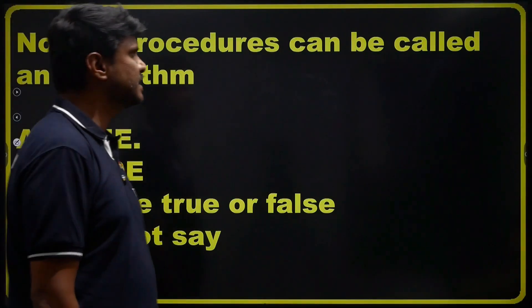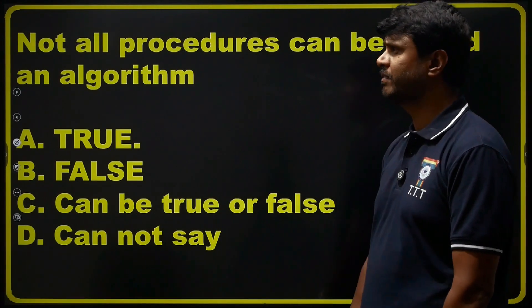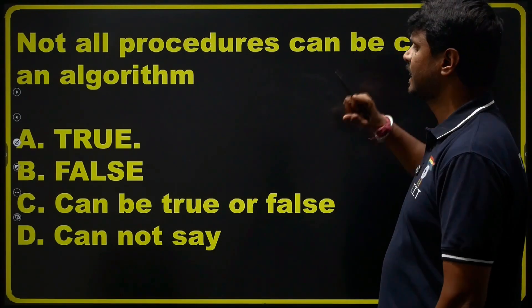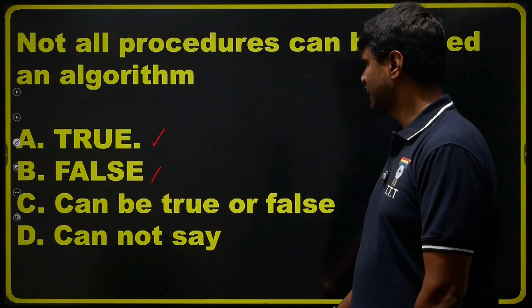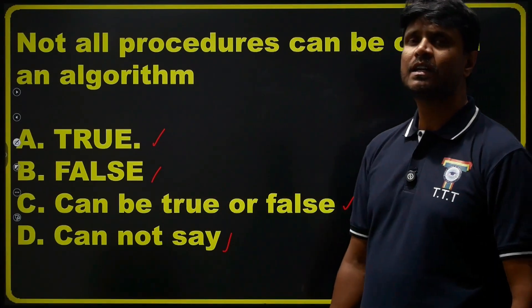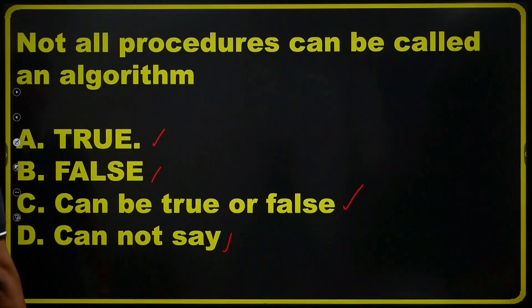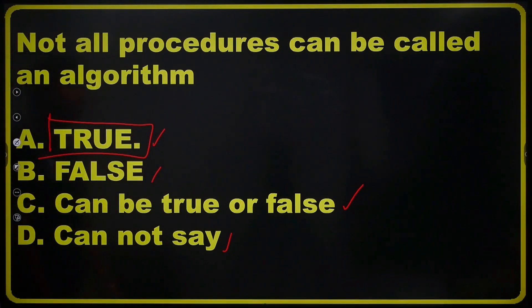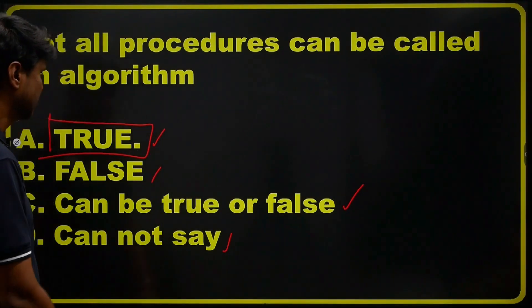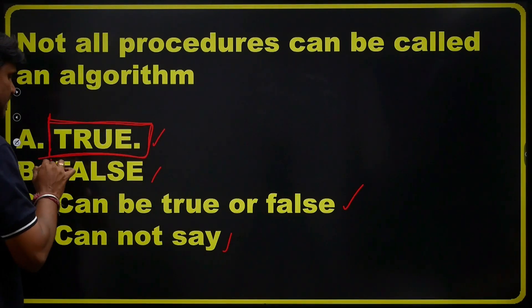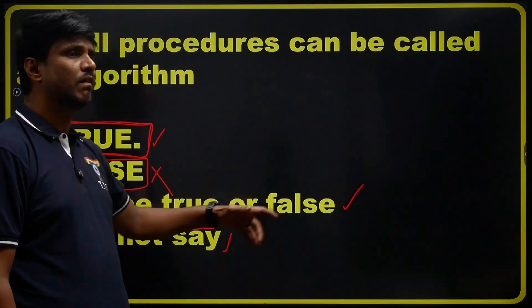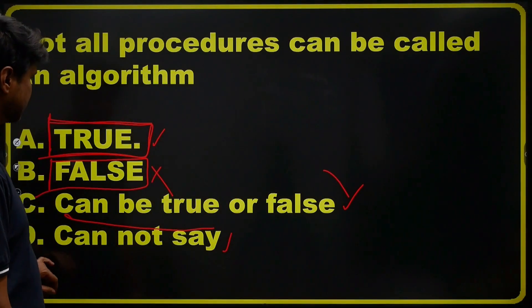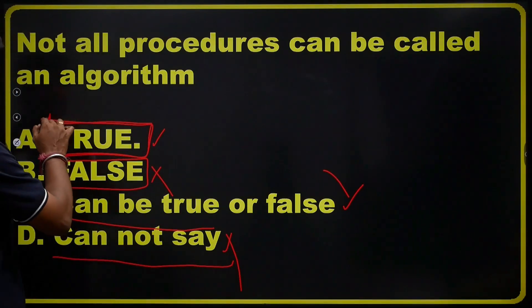Next question: not all procedures can be called an algorithm. The options are: true, false, can be true or false, and can't say. The correct answer is true, because not all procedures qualify as an algorithm. False is wrong, can be true or false is wrong, and can't say is also wrong. The answer is true.